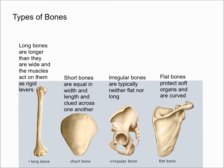Next, let's talk about short bones. Short bones are essentially square-like and they glide across one another. They can also move in multiple directions, but there's a limited range of motion. Examples would be the bones in your hands and feet, called the carpals and tarsals.